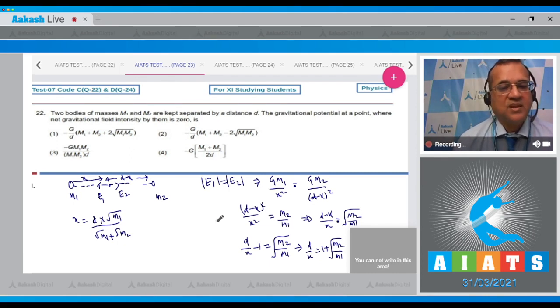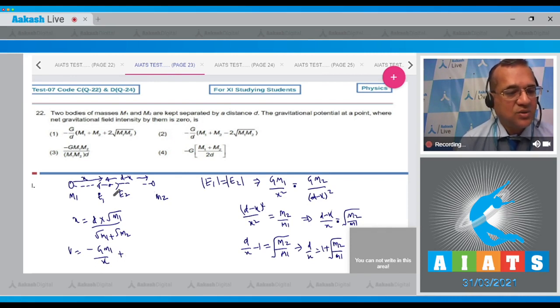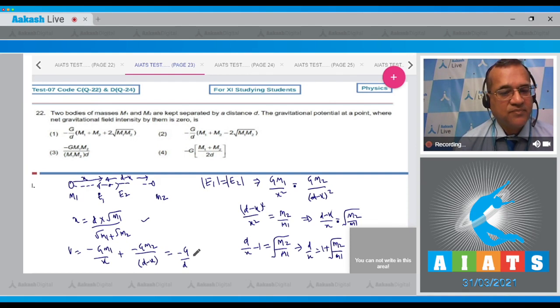Now the second part is the gravitational potential at this point. Now dear students, the gravitational potential at this point will be because of this and because of this, due to this is minus G m1 divided by distance and due to this at this point is minus G m2 divided by d minus x. We will fill this value of x in this one and you get the first option. So minus G by d and within bracket m1 plus m2 plus 2 root of m1 m2 is the correct option. So answer to this question is 1.